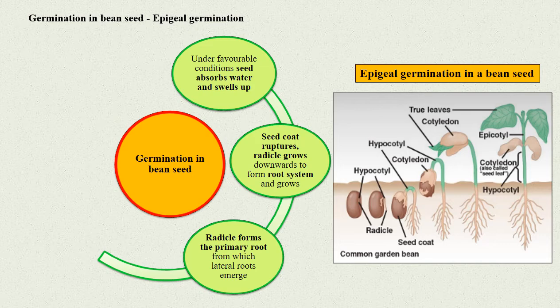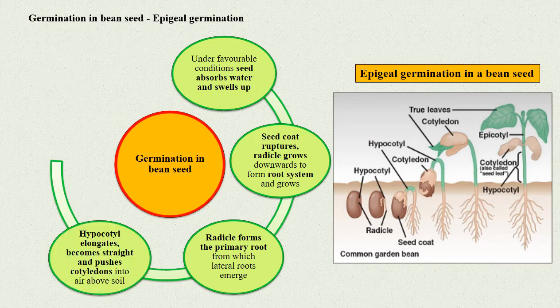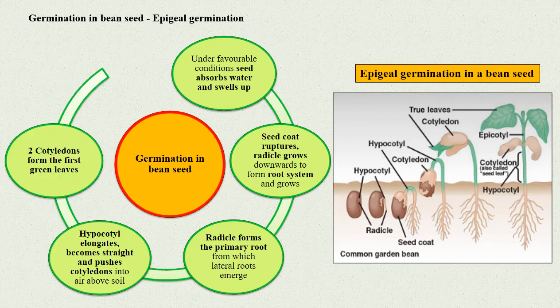The hypocotyl elongates, becomes straight, and pushes the cotyledons into the air above the soil. The two cotyledons form the first green leaves.